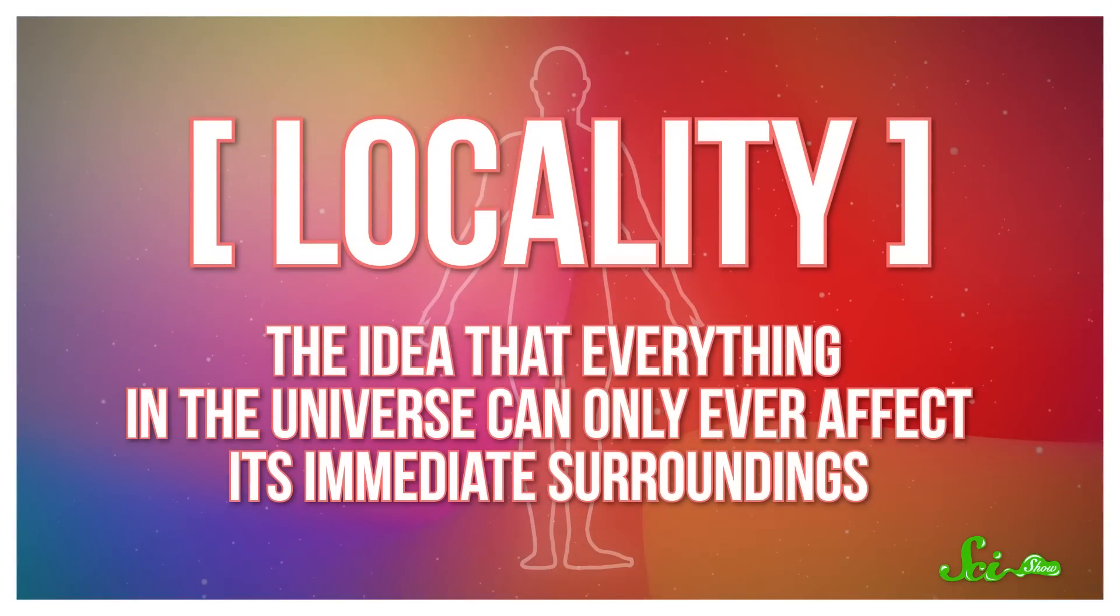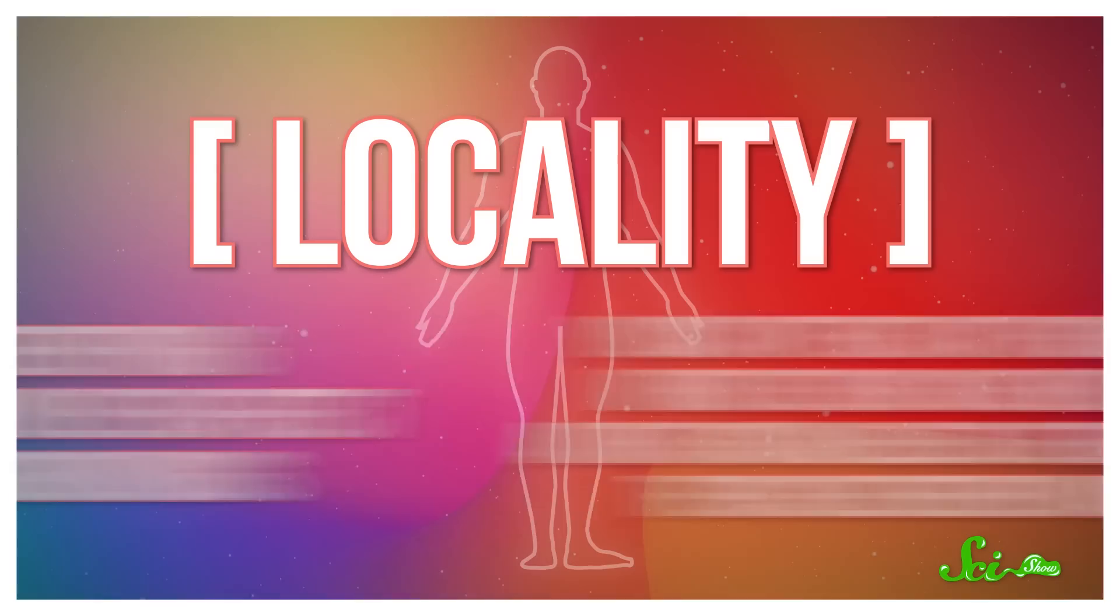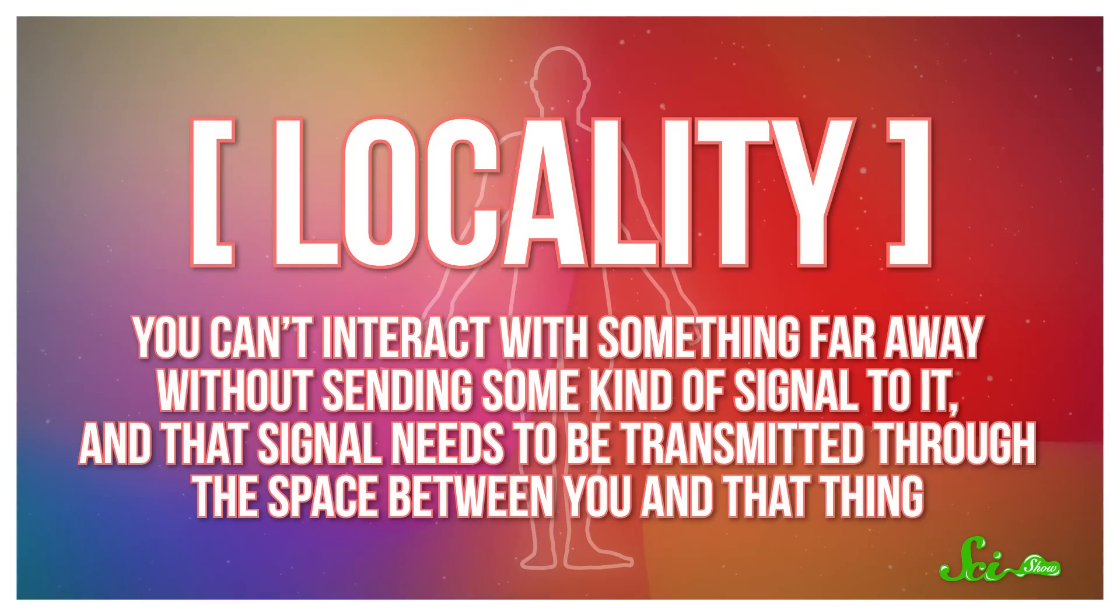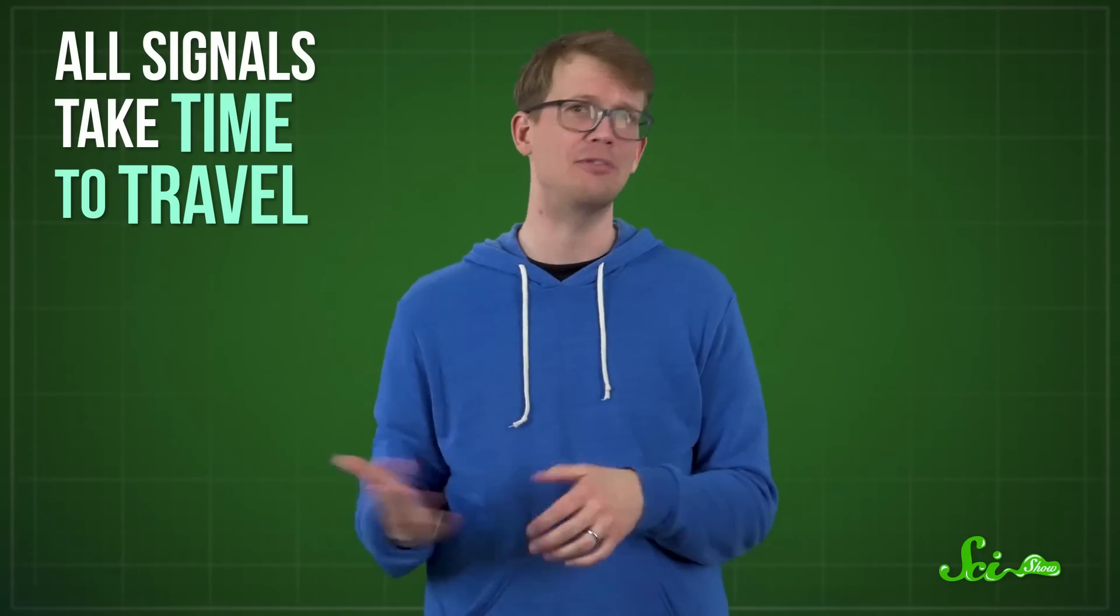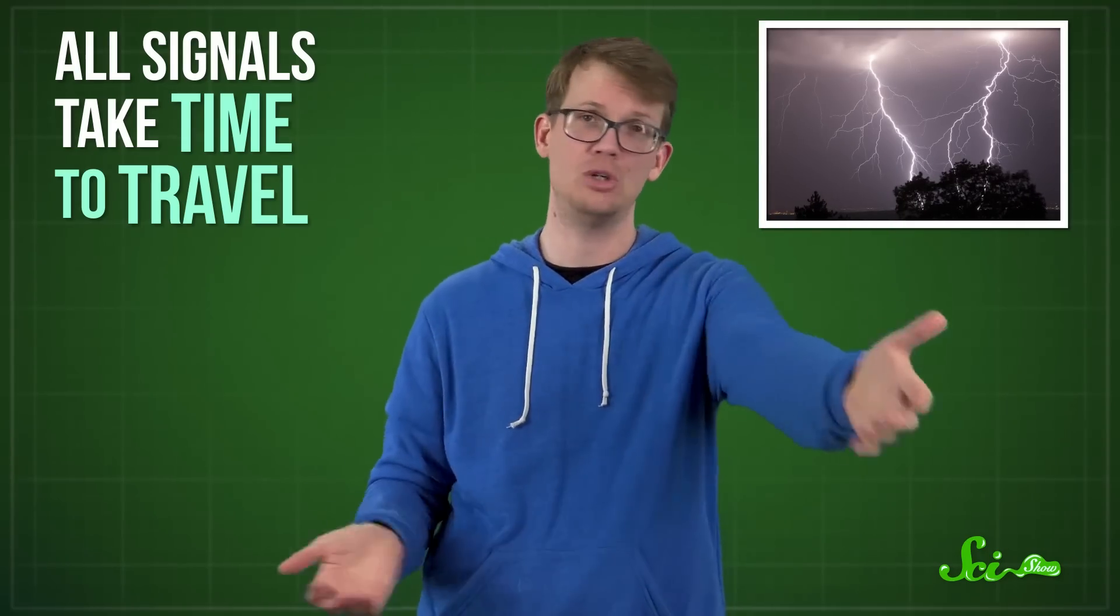Locality is the idea that everything in the universe can only ever affect its immediate surroundings. You can't interact with something far away without sending some kind of signal to it, and that signal needs to be transmitted through the space between you and that thing. Most importantly, this means that all signals take time to travel. That's why you see lightning before you hear thunder. We also know that there should be an upper limit to how fast these signals can move. Einstein worked out that the universe's speed limit is the speed of light.